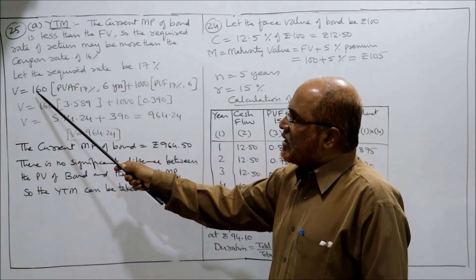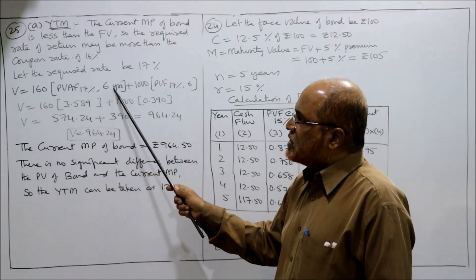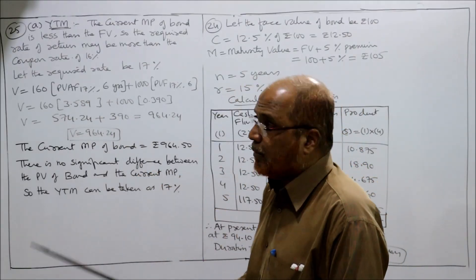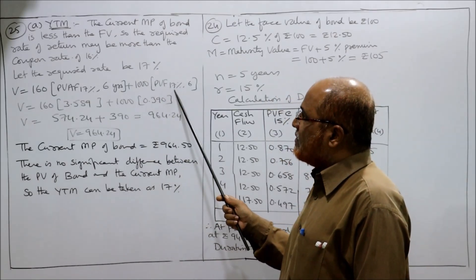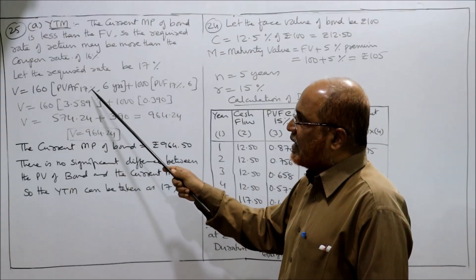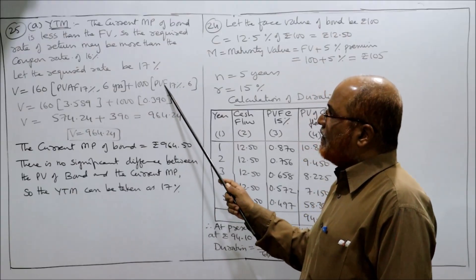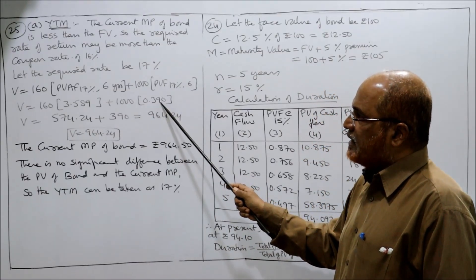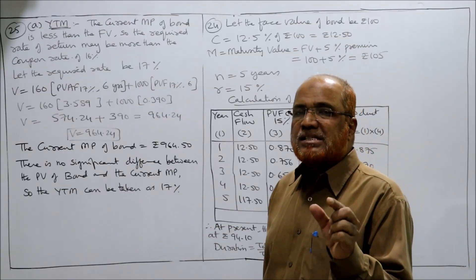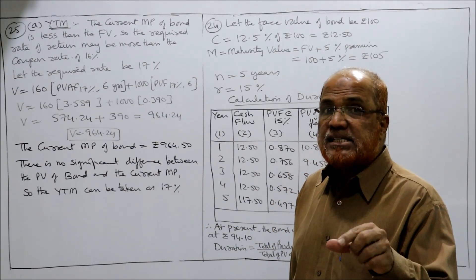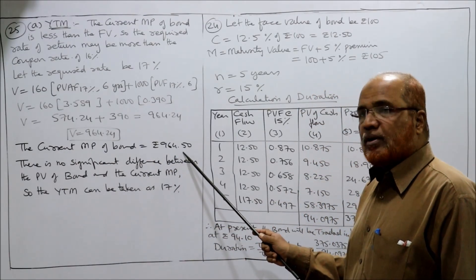We find the present value: V = 160 × PVAF(17%, 6 years) + 1000 × PV(17%, 6 years). The life of the bond is 6 years. The annuity factor at 17% for 6 years is 3.589 and the PV factor at 17% for 6 years is 0.390. The calculated value of the bond comes to 964.24.